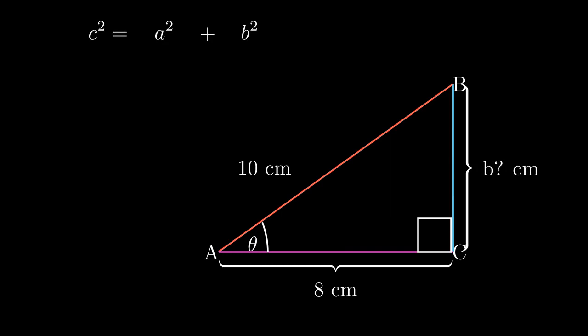We write the formula again. This time, we'll substitute c for 10 and a for 8, but we're not going to substitute b because we don't know what it is. Which gives us 10 times 10 equals 8 times 8 plus b squared. In this case, we're going to solve for b to be subject to the formula.